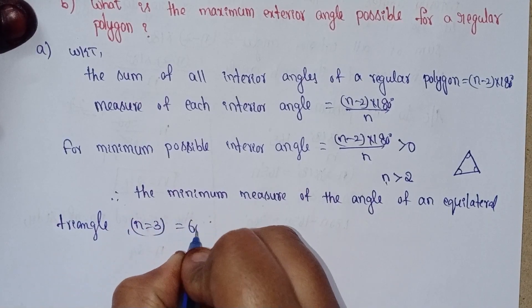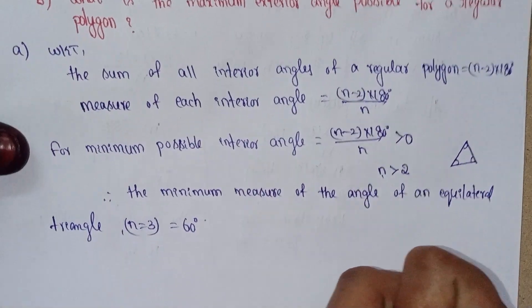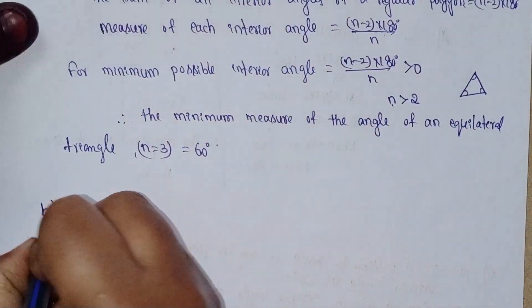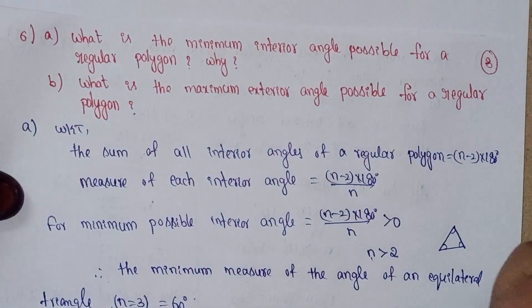Part b: What is the maximum exterior angle possible for a regular polygon?